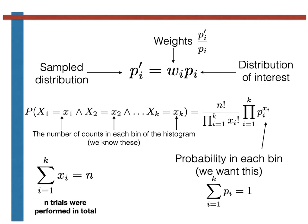Now notice that we can replace the pi prime values in our multinomial distribution with the expression for this quantity. We thus arrive at a likelihood that is written in terms of the pi values for the distribution of interest.